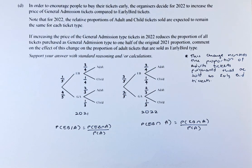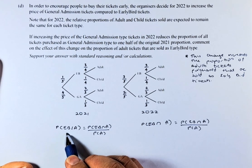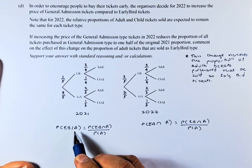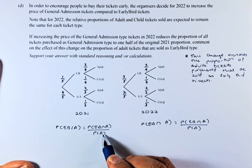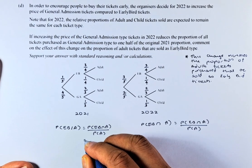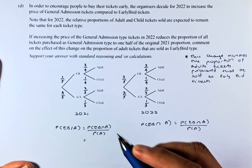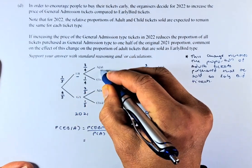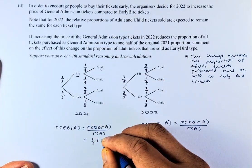So now we are going to calculate the probability of early bird given that it is an adult. We know that probability of early bird given adult is going to be probability of early bird and adult divided by probability of adult. To calculate that, this is found in question 1c but we're going to do it again. Probability of early bird and adult is going to be one-fifth multiplied by three-quarters.